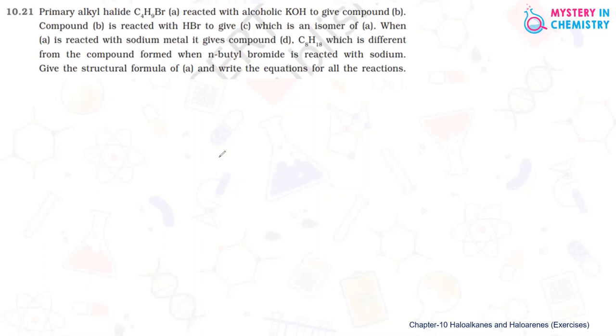Question number 10.21. Primary alkyl halide C4H9Br reacts with alcoholic KOH to give compound B. Now for such kind of questions with the reading, start making skeletal of the question and then only it will be more clear to understand all the reactions and the structure also.